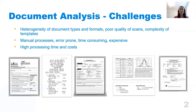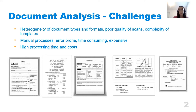As you all know, many verticals today still depend on paper documents or on documents stored as images such as receipts, invoices, reports, contracts, lease agreements, forms, scanned audit records, or all sorts of financial reports. Extracting high quality data from those documents comes with several challenges. First, the big heterogeneity of document types and formats — some available in poor quality scans or photos maybe taken from an angle, which complicates the problem a little bit more.